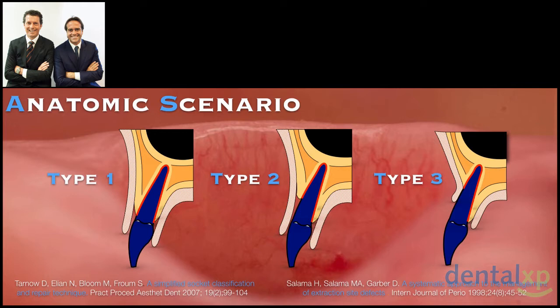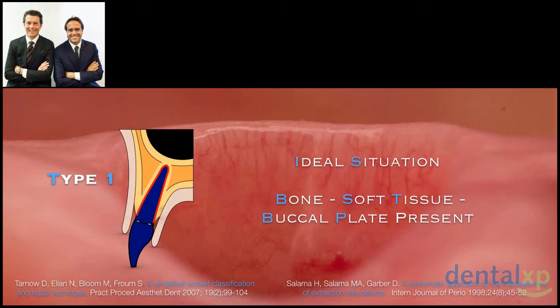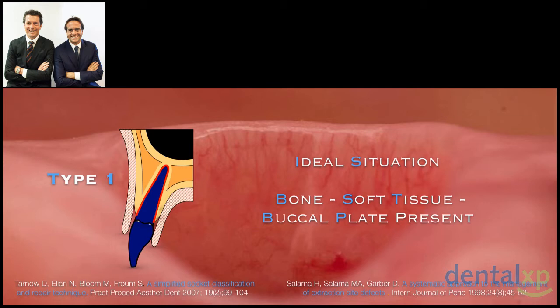In Type 1 we have both a buccal plate and soft tissue. In Type 2, we have soft tissue but are missing the buccal plate — a clinical scenario that is very critical and requires a defined, strategic diagnostic approach. In Type 3, we are missing both the buccal plate and soft tissue, with loss of interdental bone height as well. The ideal Type 1 scenario requires at least one millimeter of buccal plate thickness and a thick gingival biotype, but unfortunately this ideal situation represents only roughly 15 to 20 percent of cases.